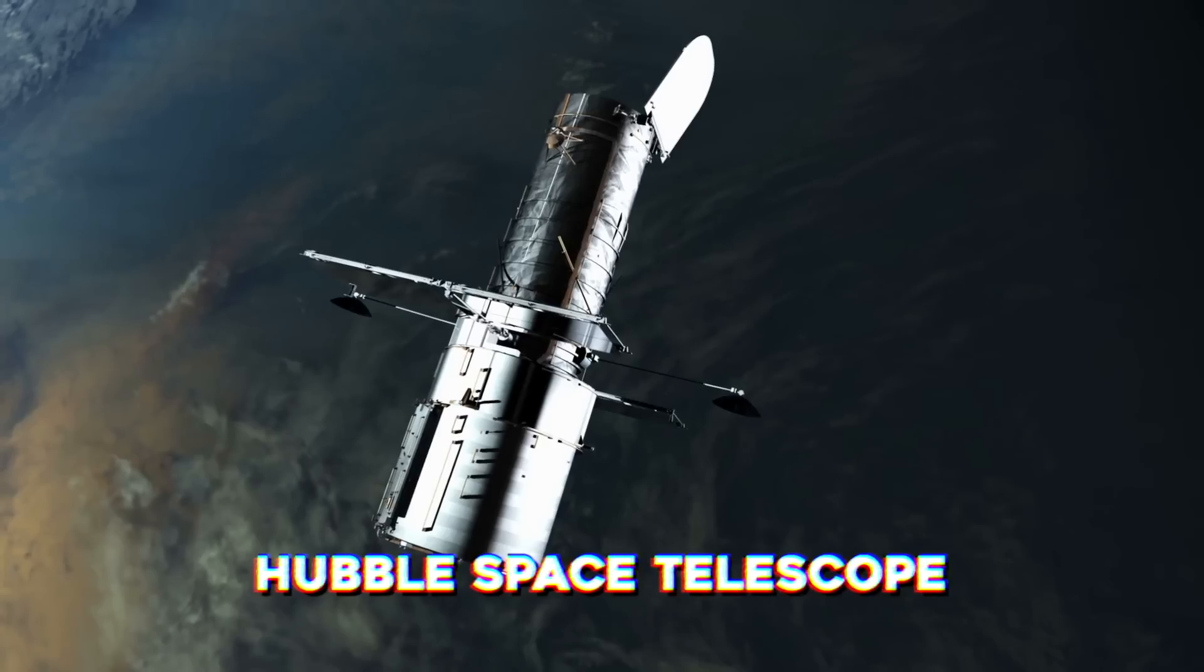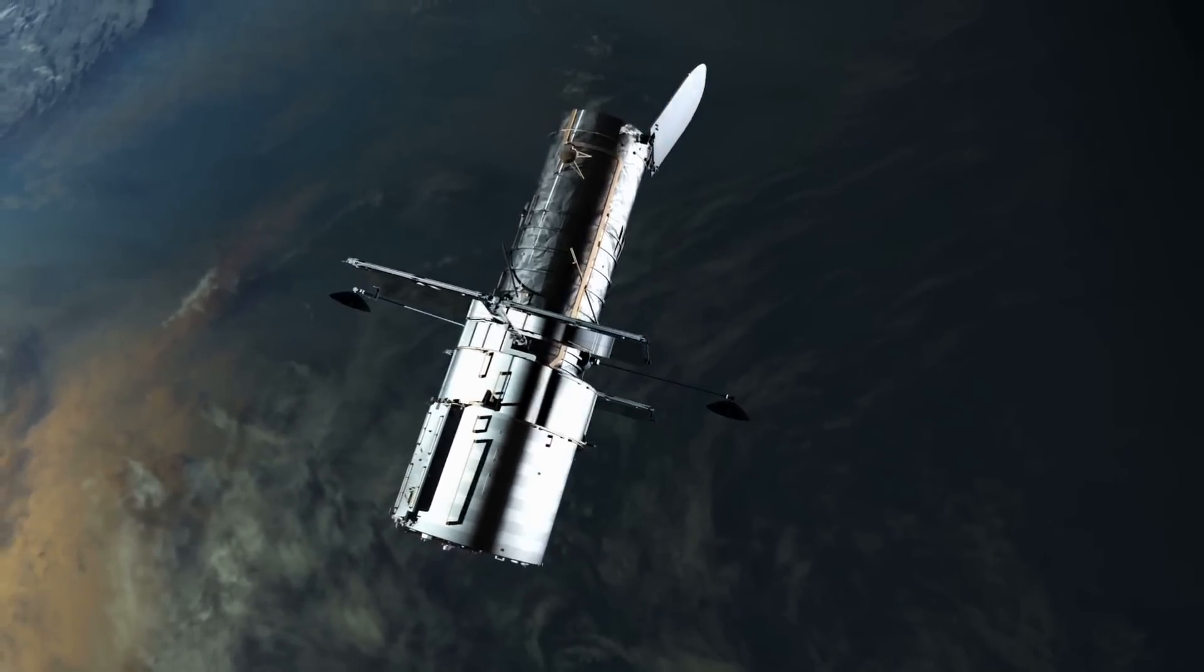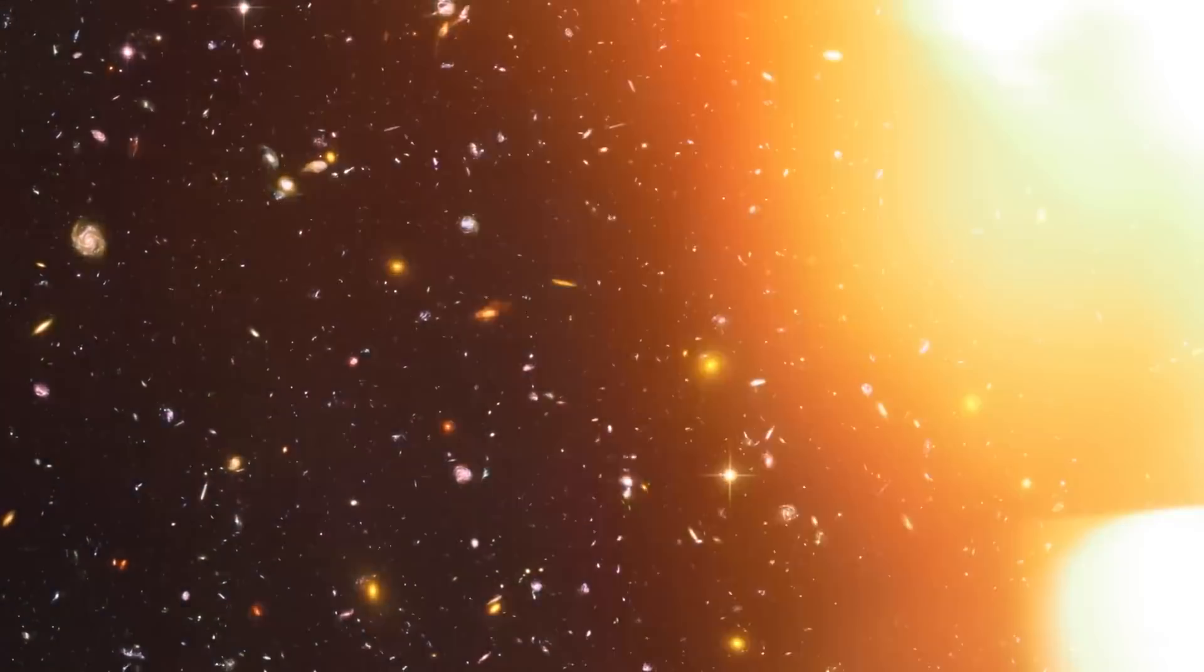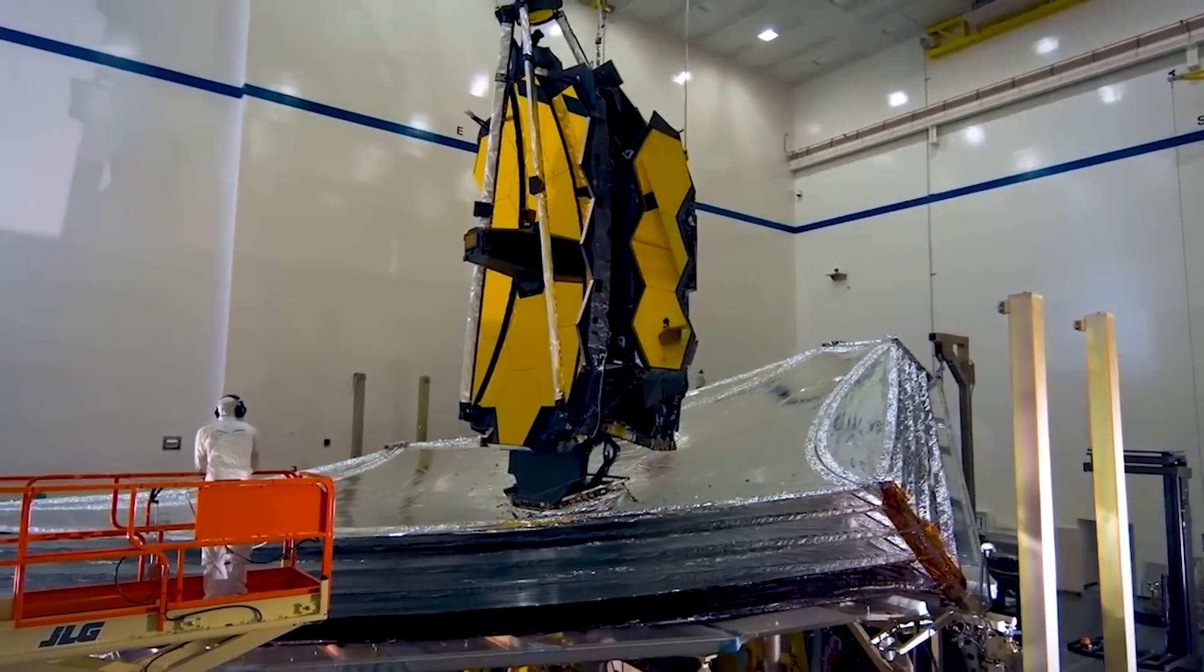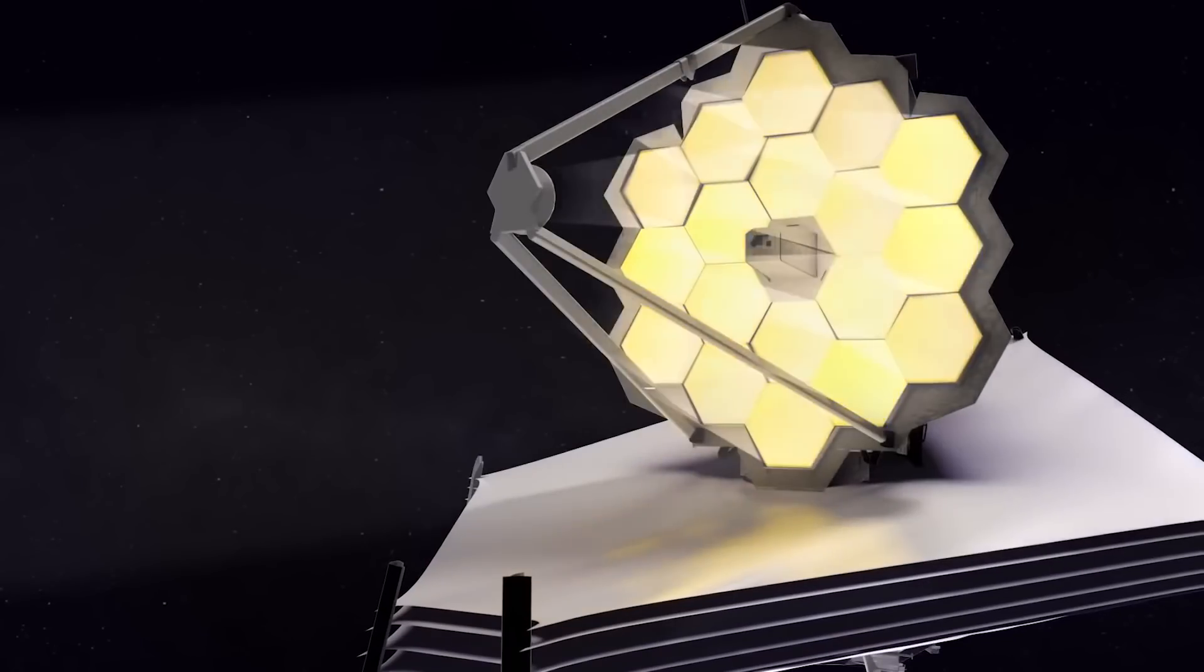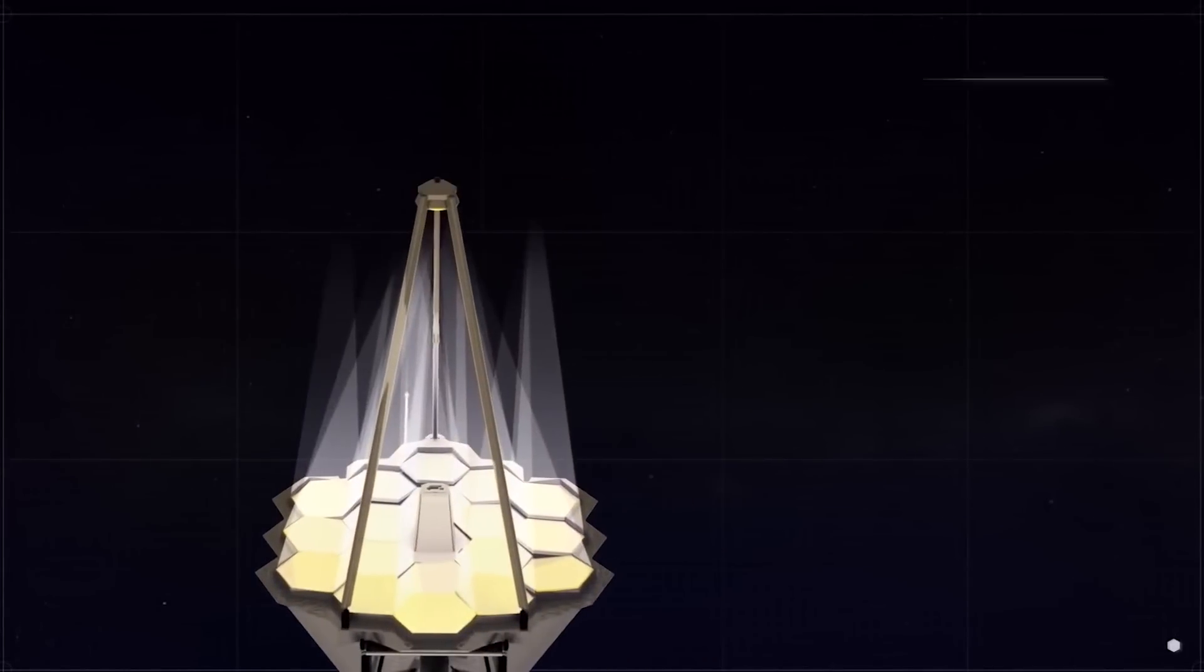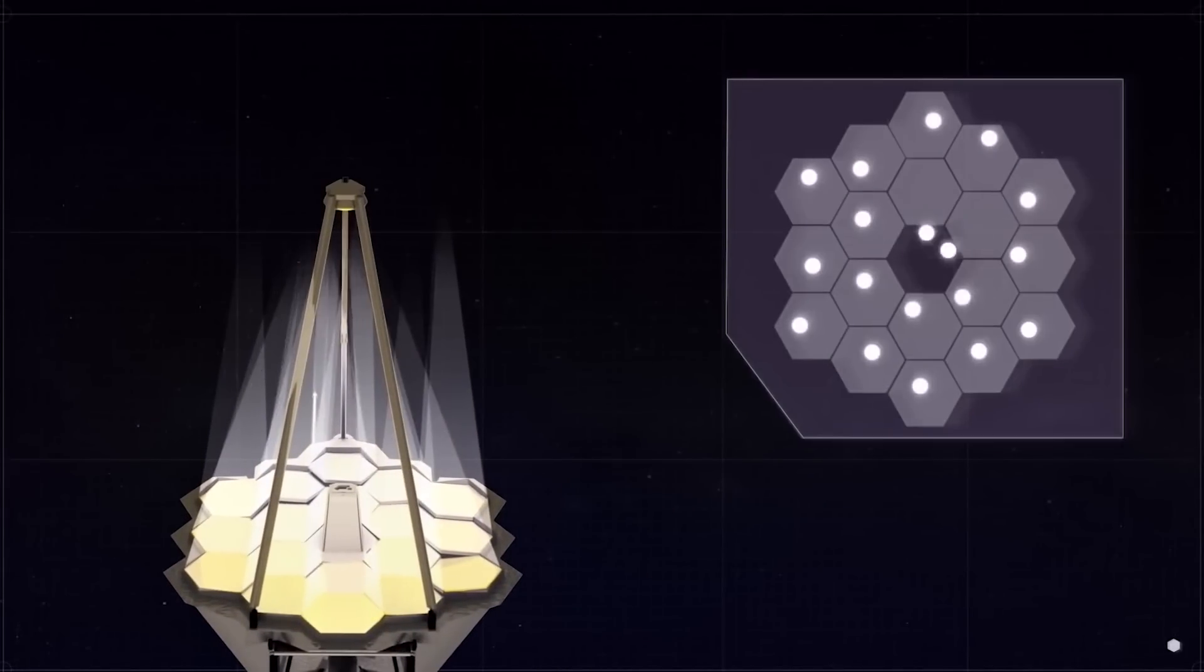While Hubble needed a service mission after launch to work correctly, Webb appears to be a prime example of optical perfection. NASA reports the telescope's instruments are diffraction-limited, which means it's as good as it can possibly be given the size of the mirror.